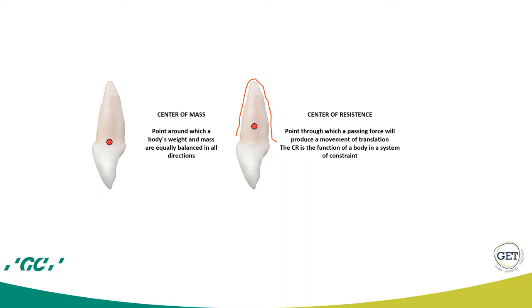We start by defining what the center of mass and the center of resistance of a body are. The center of mass is the point around which the body's weight and mass is equally distributed. The center of resistance of a body is the point through which a passing force will produce a translation, or the point at which the force system determines the kind of movement the body will undergo.